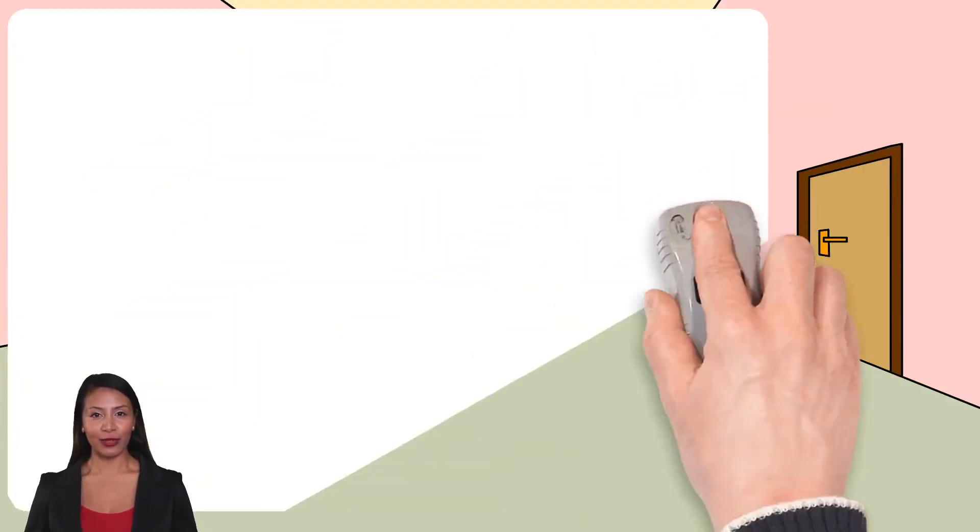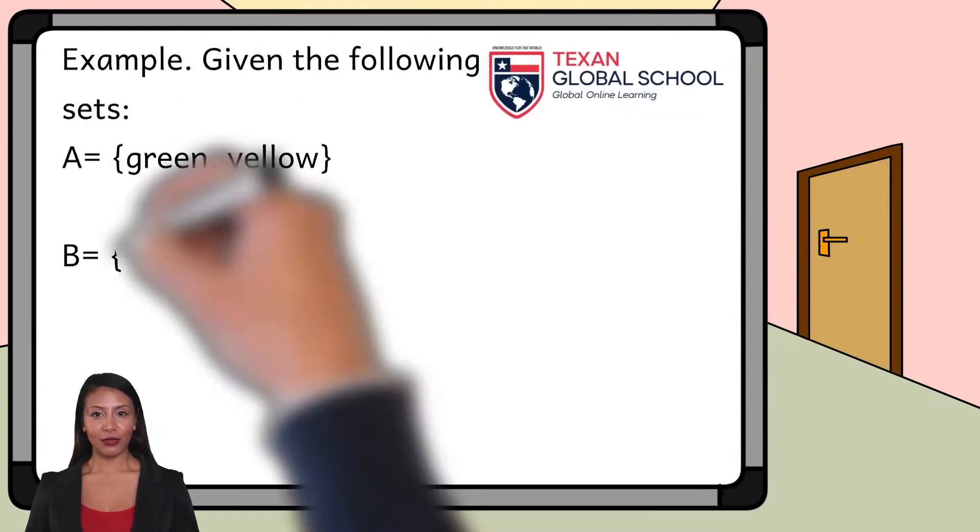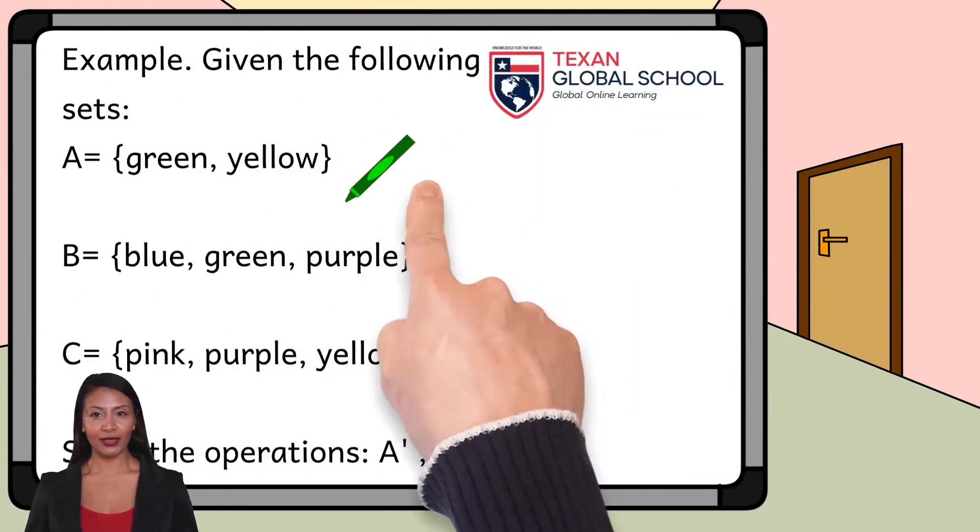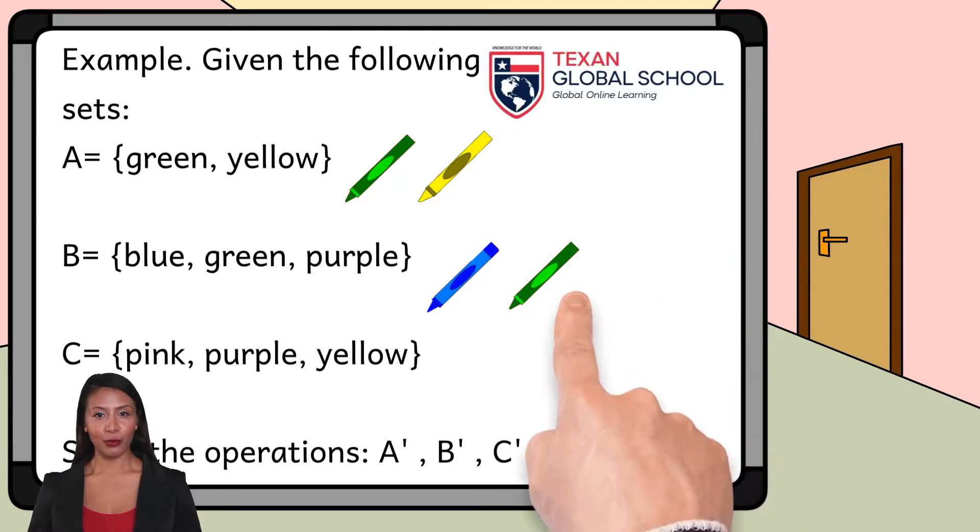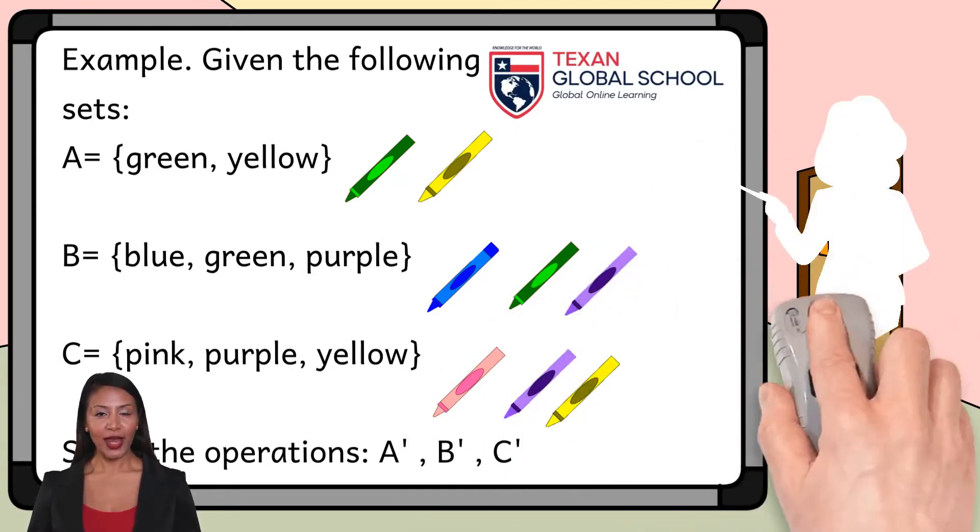Let's look at the first example, given the following sets. Set A, whose elements are the green and yellow crayons. Set B, whose elements are blue, green, and purple crayons. And Set C, whose elements are the pink, purple, and yellow crayons.